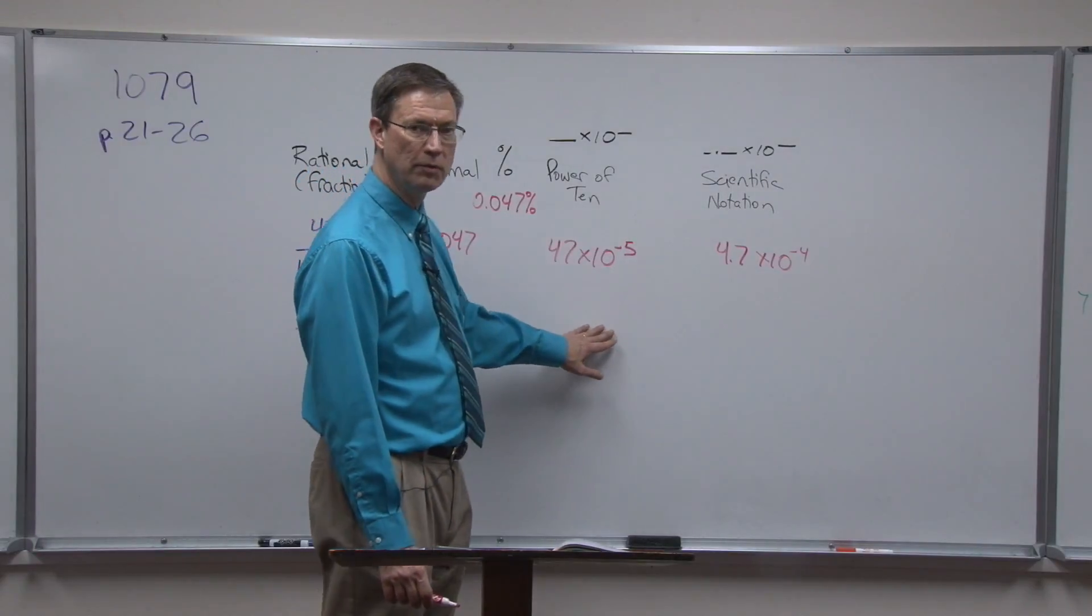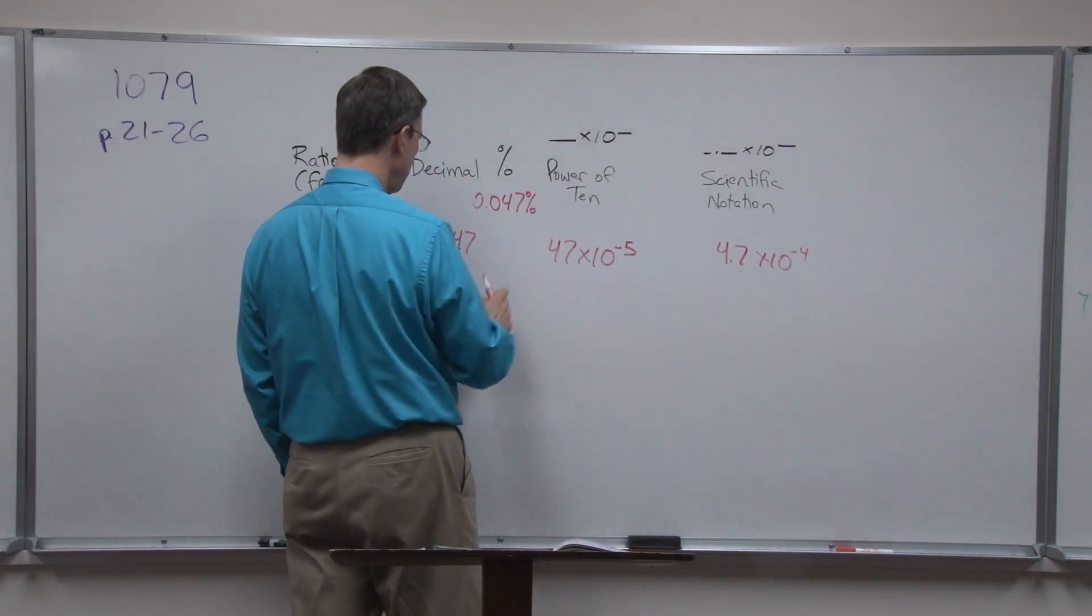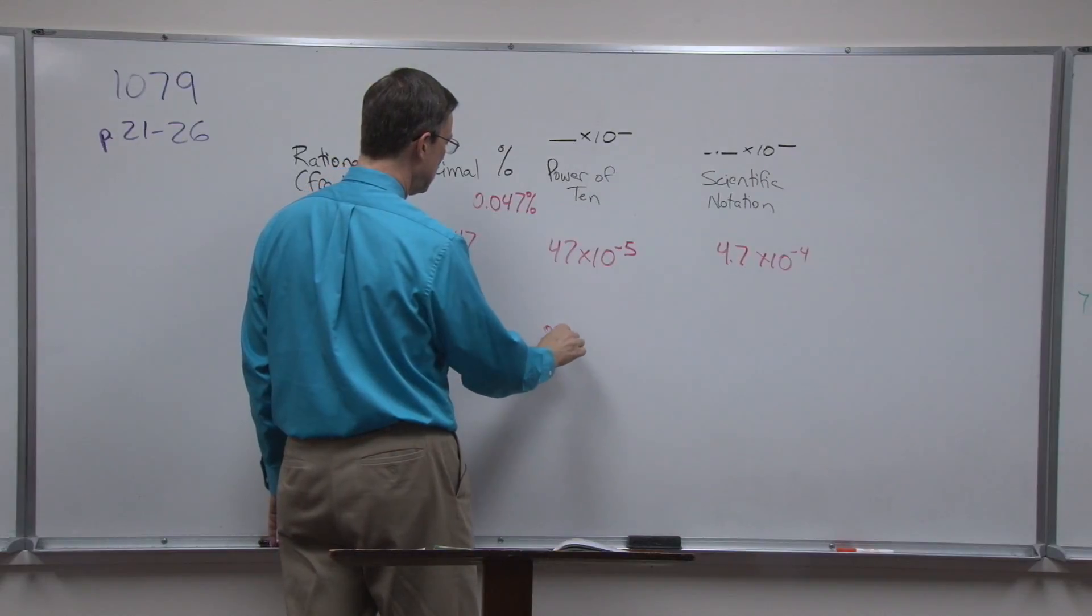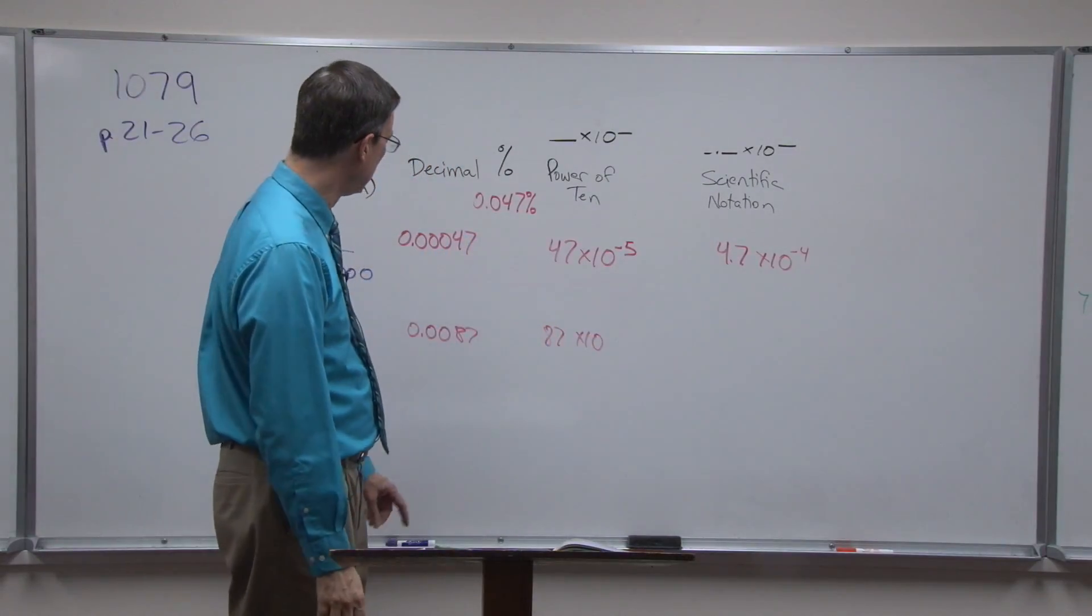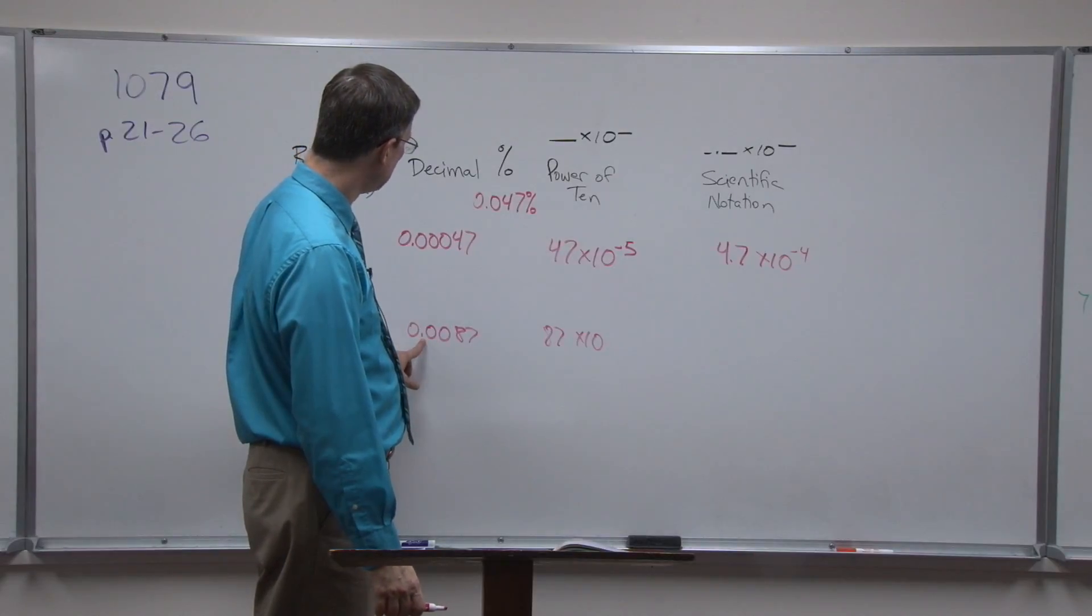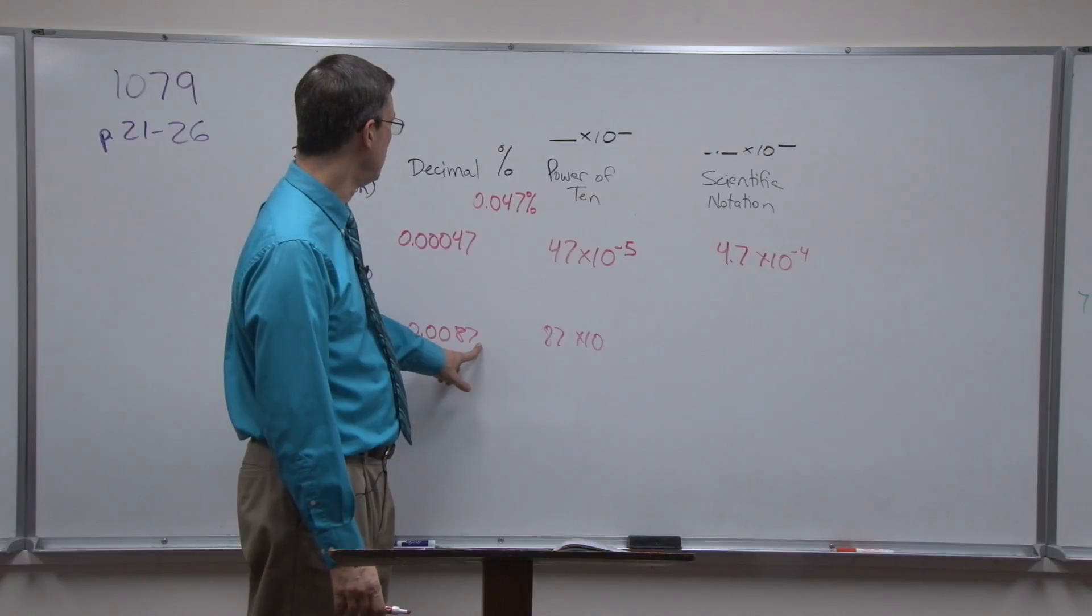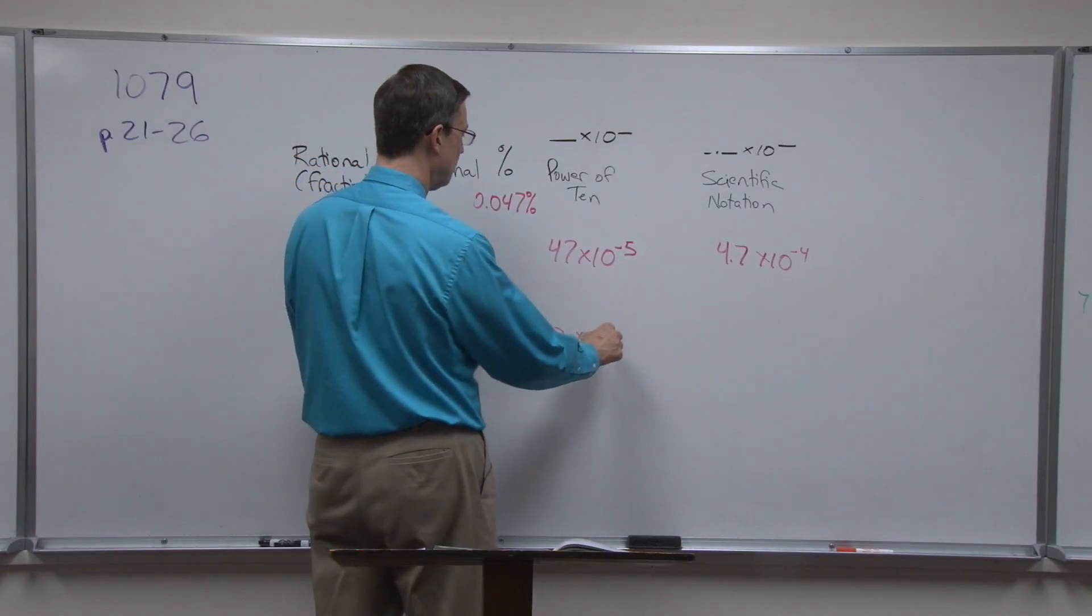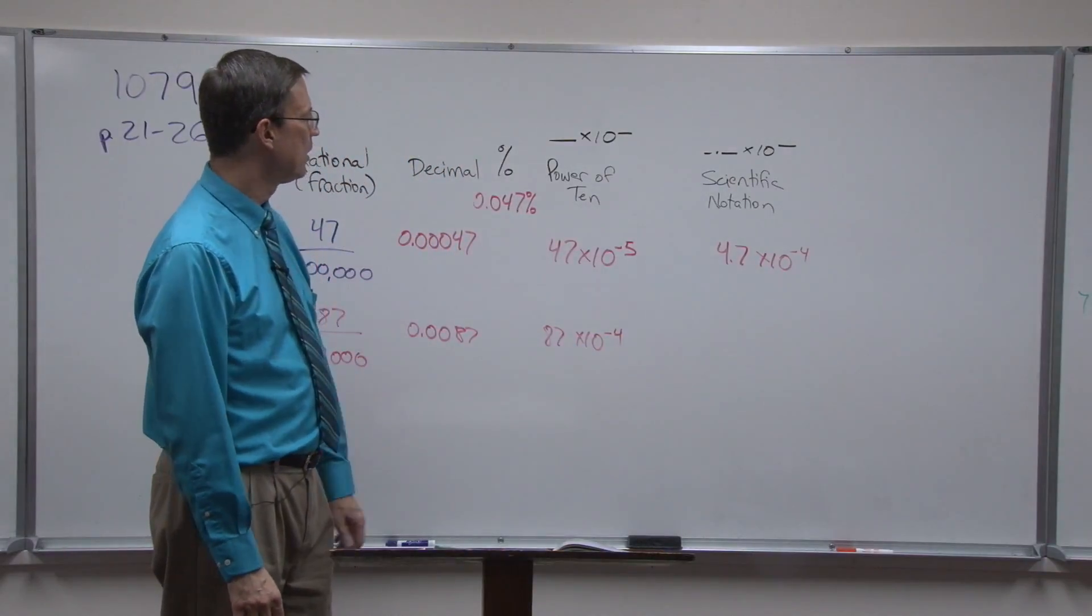But now let's talk about the power of 10. So power of 10 means we take the entire number without the zeros, which is the 87, and you write times 10, and now we've got to figure out what the exponent is. How many places would I have to move it to get it all the way to the end? Notice it would move four places to get to the end, and so this will be negative four.